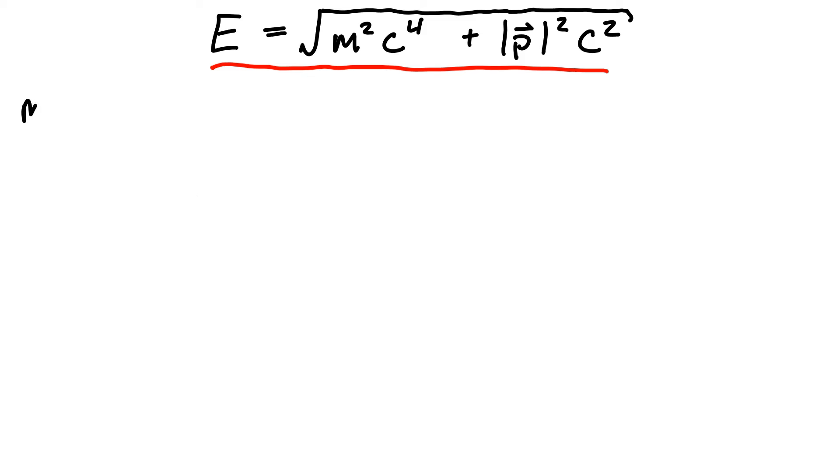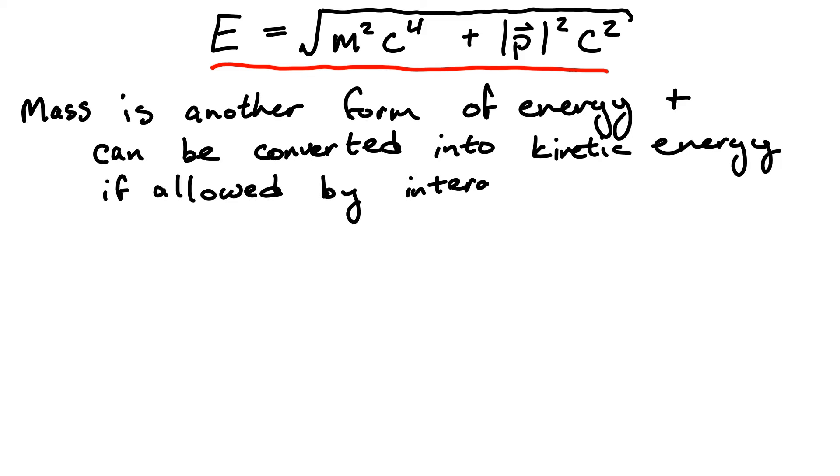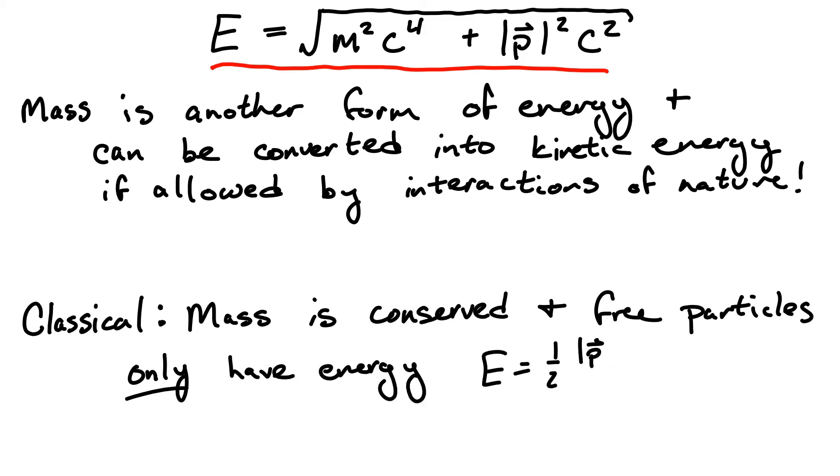Going back to the case of massive particles, perhaps the most profound thing that we learn from this equation is that the rest mass of a particle is simply another form of energy to be treated on equal footing with the kinetic energy associated with the movement of the particle. This means that it's feasibly possible to convert mass into kinetic energy and vice versa. Note that this is in stark contrast with the classical case where mass is a conserved quantity. It can never be created nor destroyed.